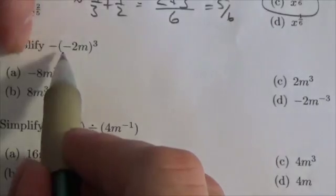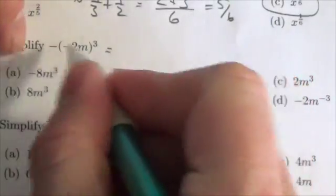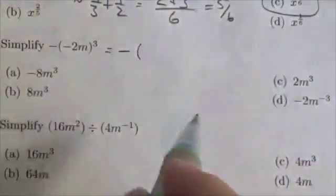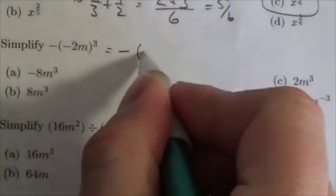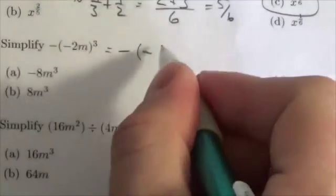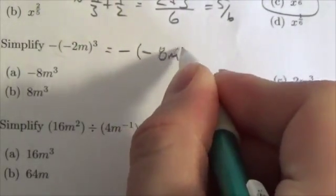That 3 applies to everything inside there, so this negative out front stays out front. And what we've got here is a negative cubed, which is going to be negative. 2 cubed will be 8 times m cubed.